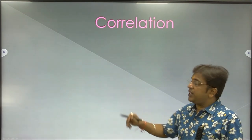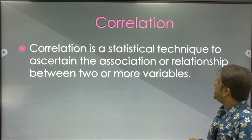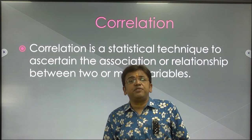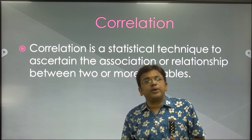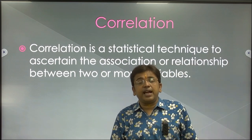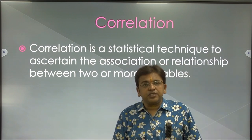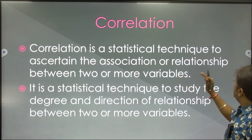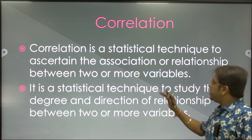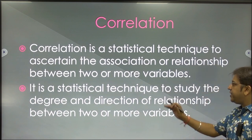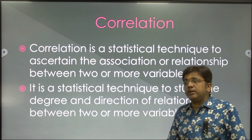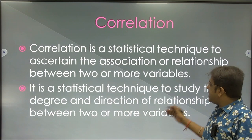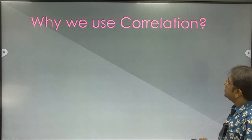Now, what is correlation? Correlation is a statistical technique to ascertain the association or relationship between two or more variables. In correlation, we are going to associate the relationship between two or more variables, but here we also find the magnitude, direction and the degree in which they are joined and related. The direction is also known by the help of correlation. It is a statistical technique to study the degree and direction of relationship between two or more variables.